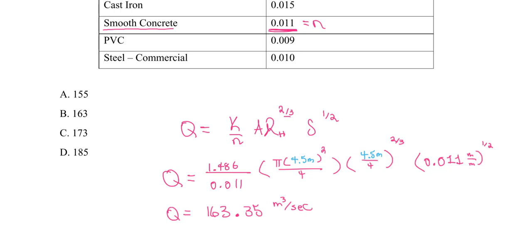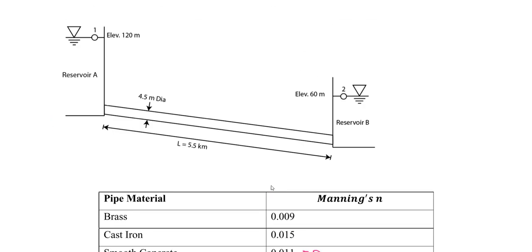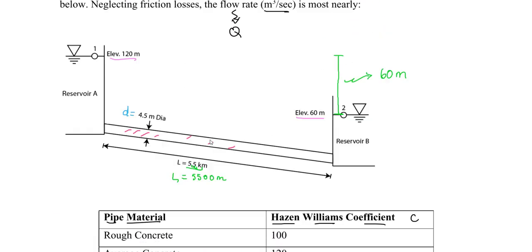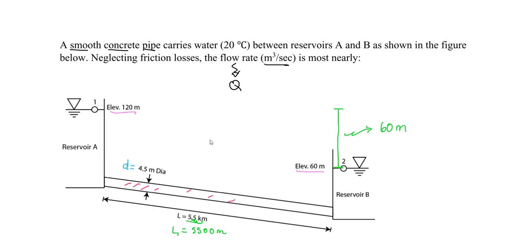Solving for Q, we get our final units in cubic meters per second, approximately 163.35 cubic meters per second. This answer using the Manning equation would be B. Using the Manning equation, the flow rate is lower given the same conditions — about 163 compared to 178 cubic meters per second with the Hazen-Williams equation. Hope that helps.